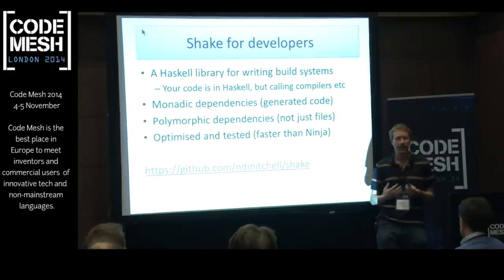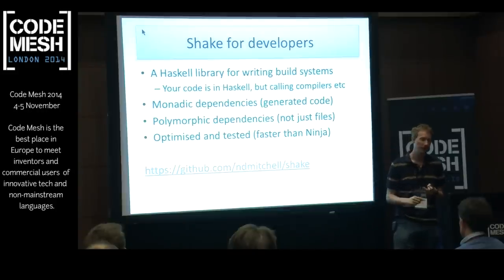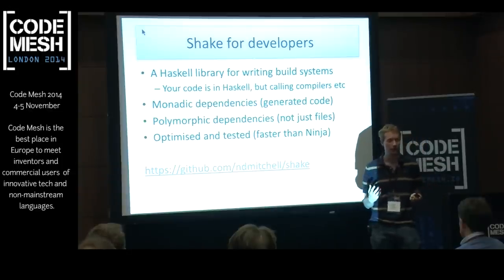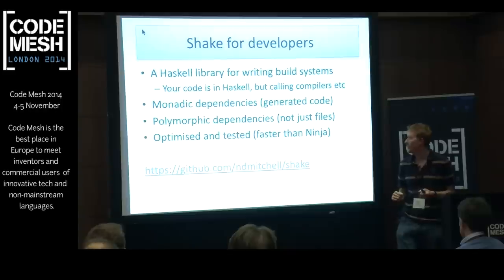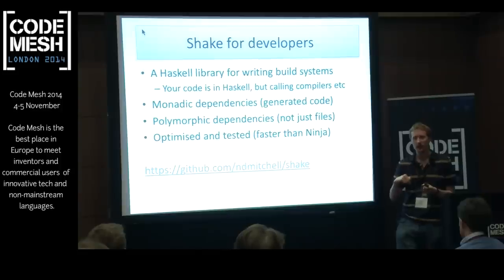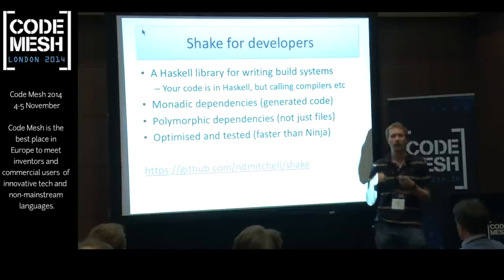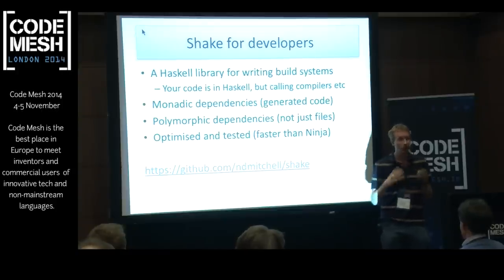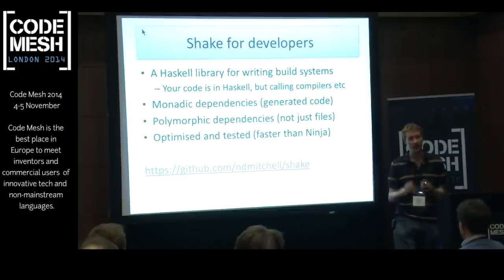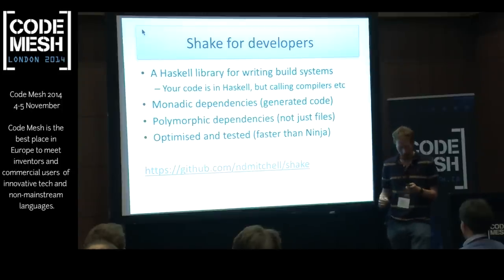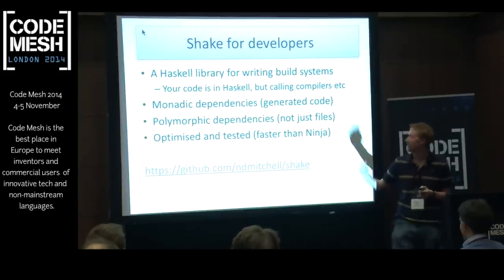Just because we're writing it in a high-level language doesn't mean we don't want to optimize and test it. In particular, Ninja — kind of the gold standard for fast build systems, what the Chrome project uses — Shake can interpret Ninja build files, and Shake can build Ninja itself, using Ninja's own build rules, faster than Ninja can do it. That's actually part of my continuous integration task: if it goes slower, I can't push.